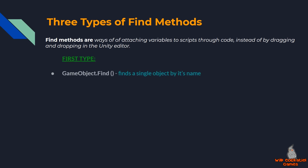The first of these three ways is using GameObject.Find, where we find and attach variables by literally typing the name of what we're looking for. It has some big disadvantages, but I'll show you the strengths and weaknesses in a moment.